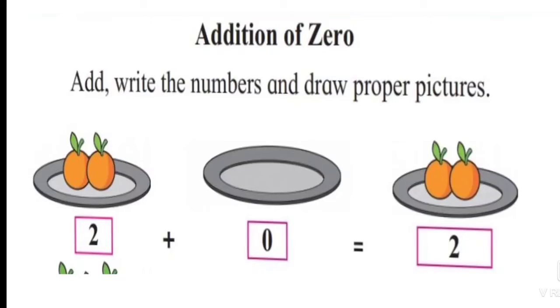How many oranges are there? There are two oranges. When we plus zero oranges, it is equal to two oranges.